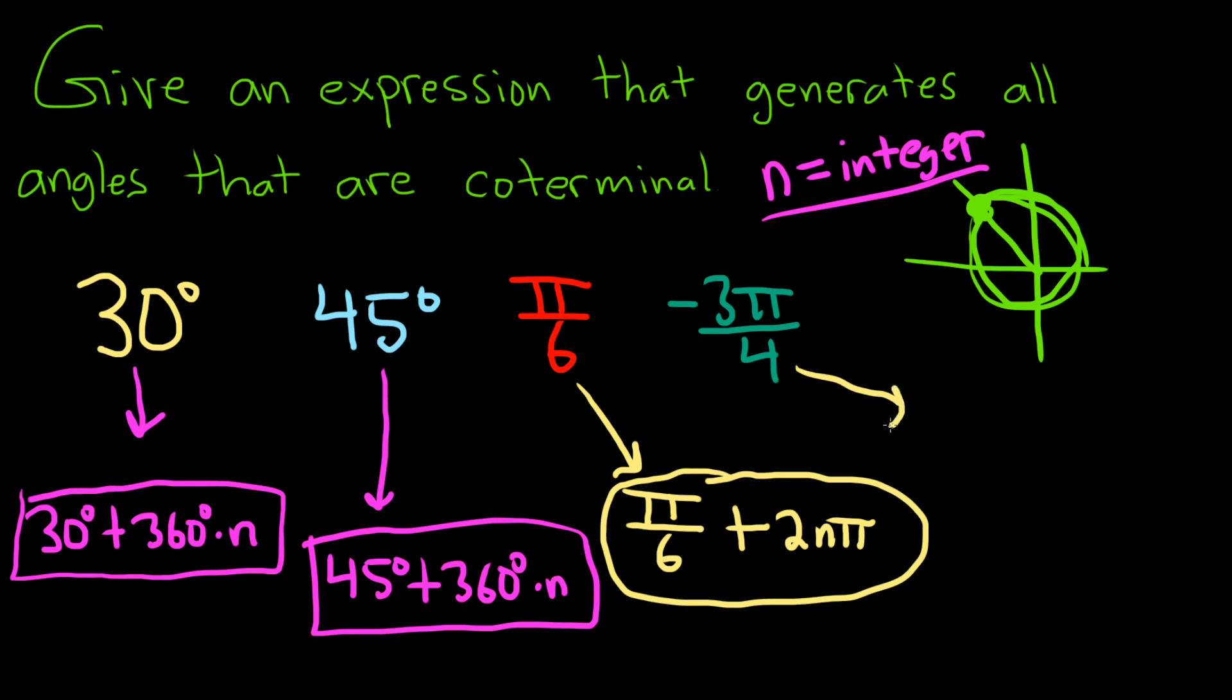For this last one, it would be -3π/4 + 2nπ. And that would be the answer there. I hope this video has been helpful.